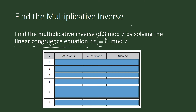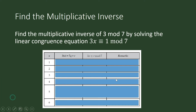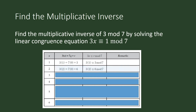Find the multiplicative inverse of 3 modulo 7 in the set. Which among these is a multiplicative inverse of 3 modulo 7? Is it 1? No. Is it 2? No, because 3 times 2 is congruent to 6 modulo 7. We are looking for that integer so that the product is congruent to 1 modulo 7.